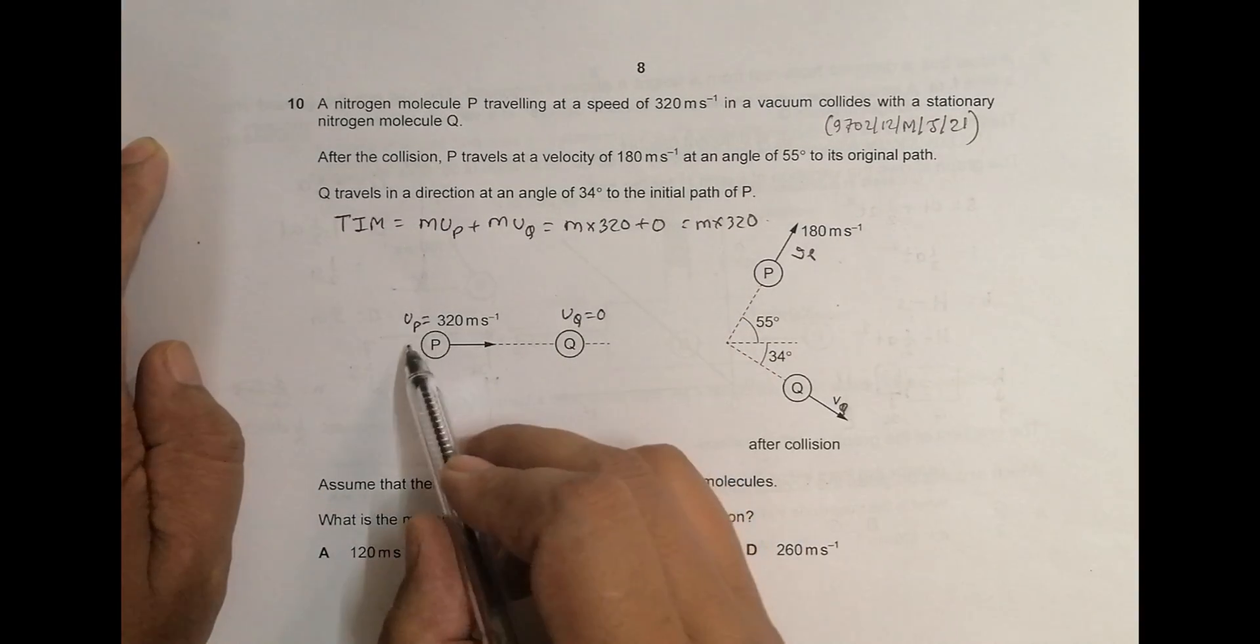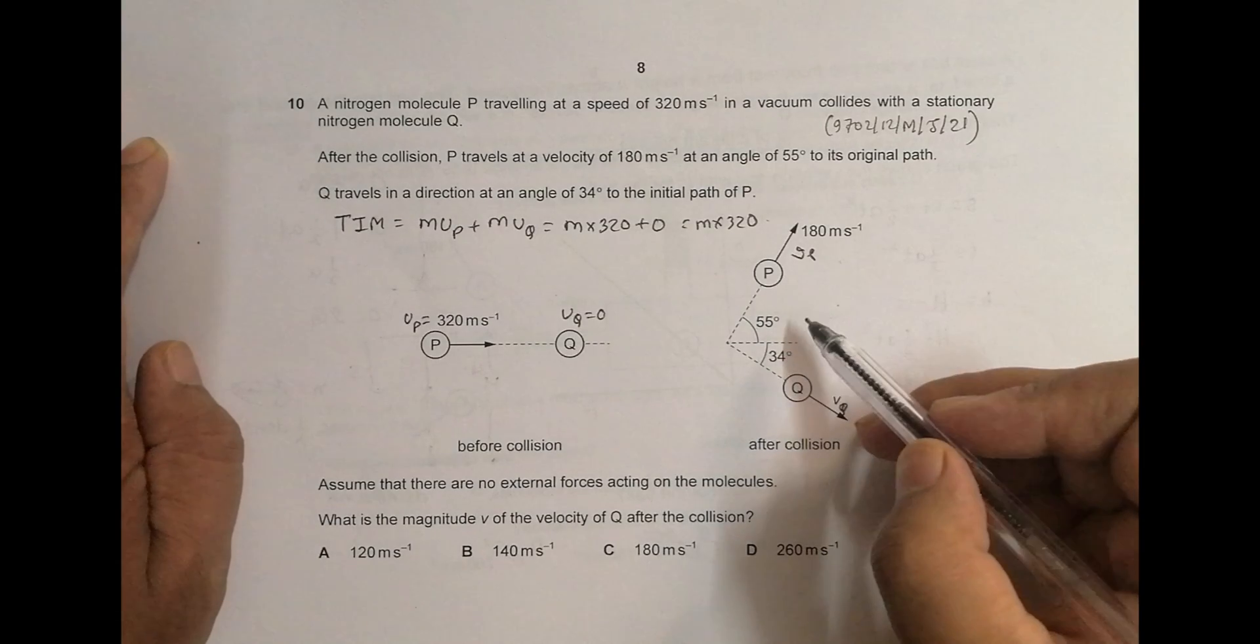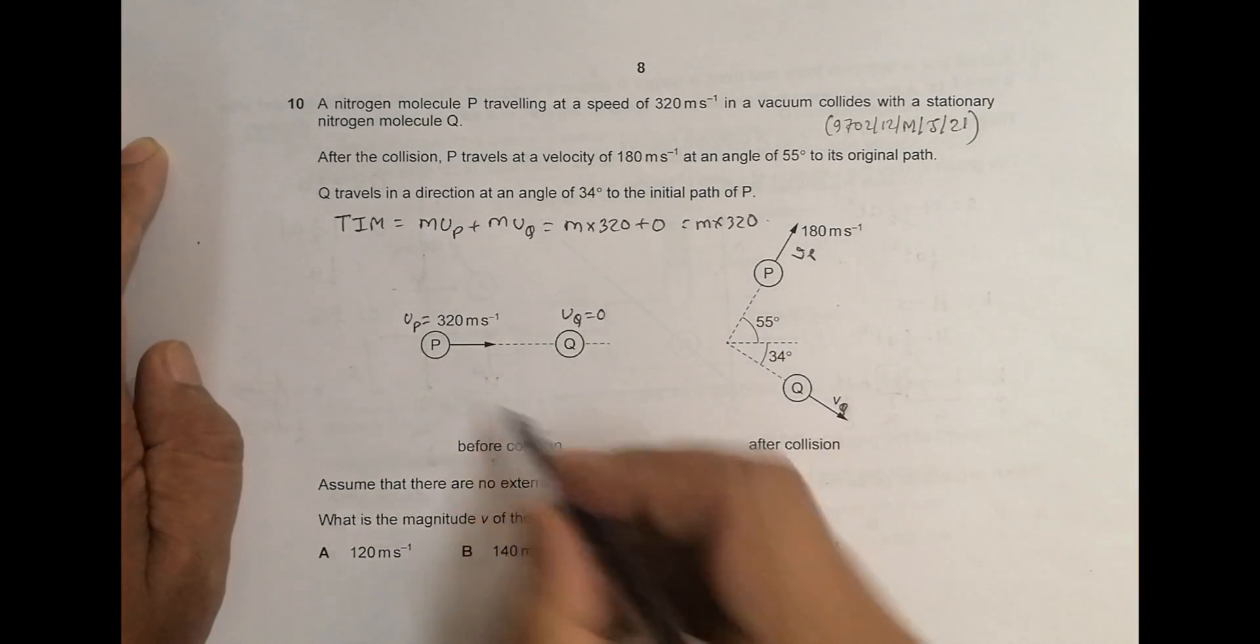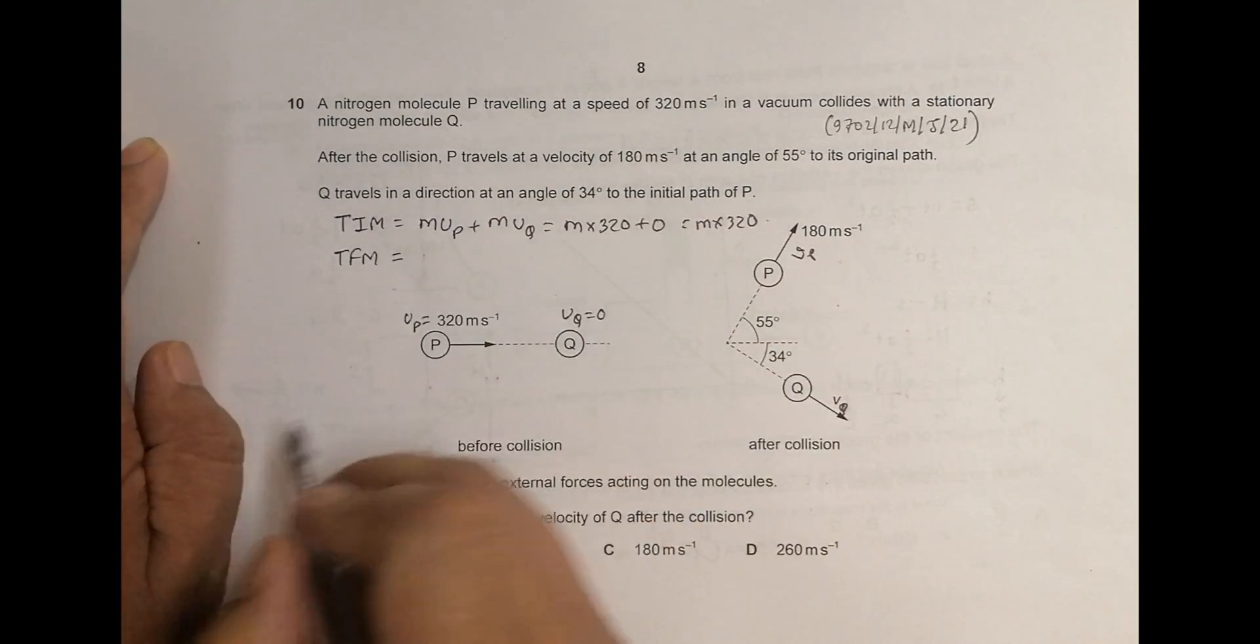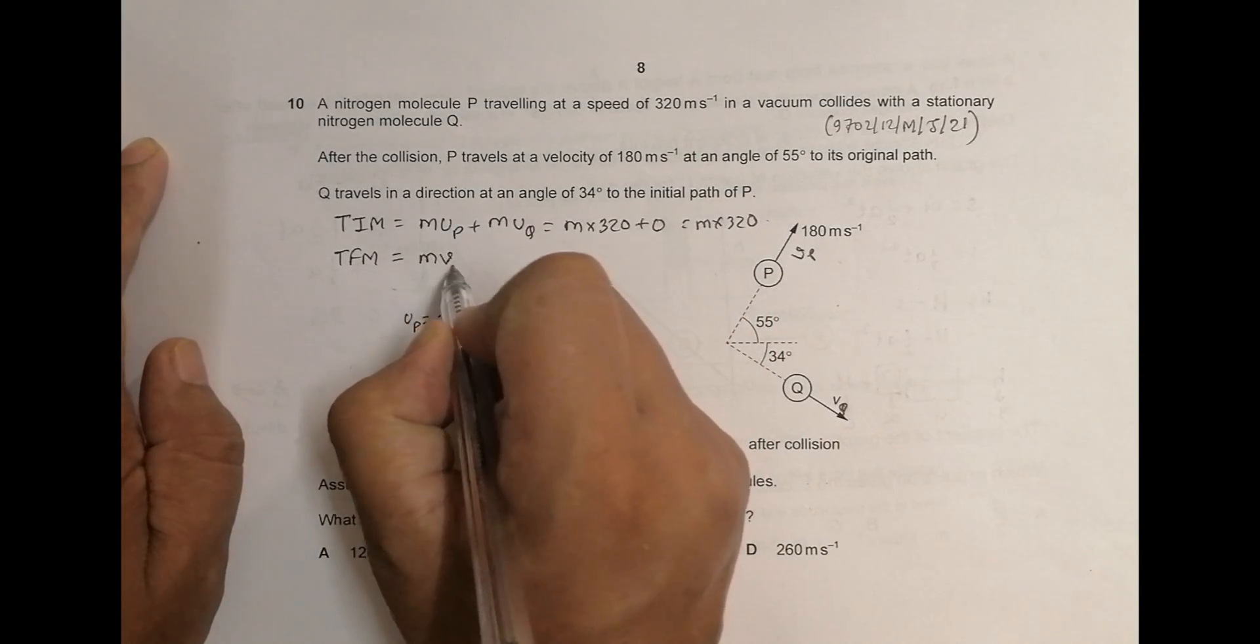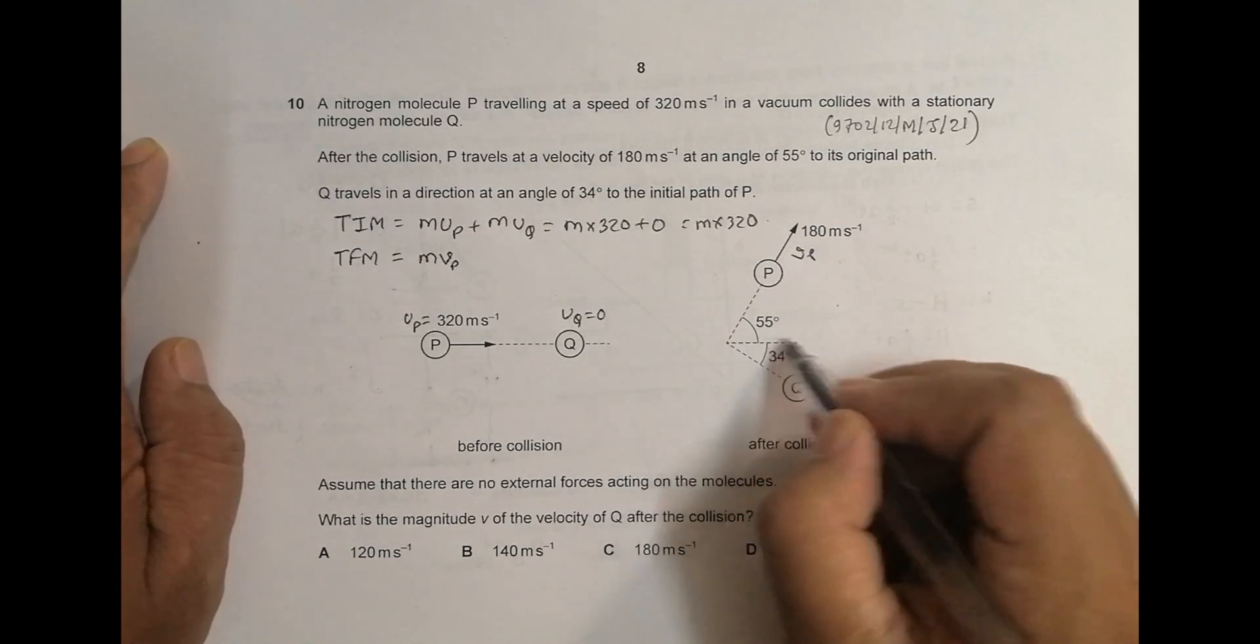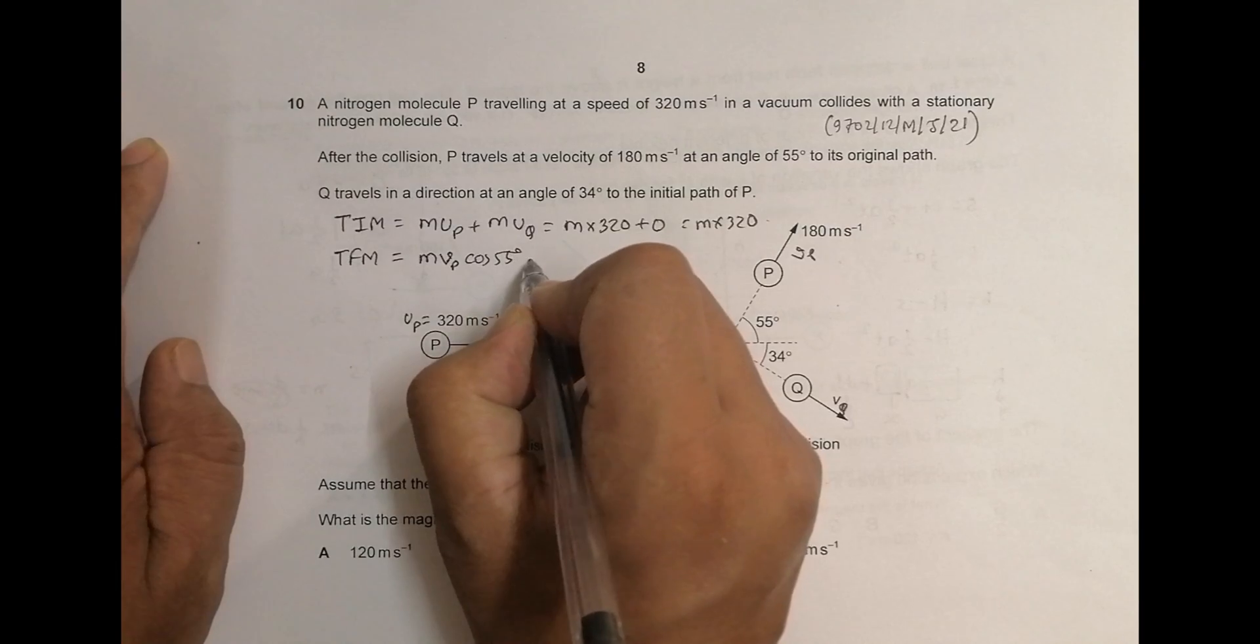Now after collision, so this momentum we are taking in this direction. So we have to take the momentum of these two in this direction. So total final momentum in this direction is equal to mass M into V P, V P in this direction is equal to cos, cosine. So it is cos of 55 degree plus